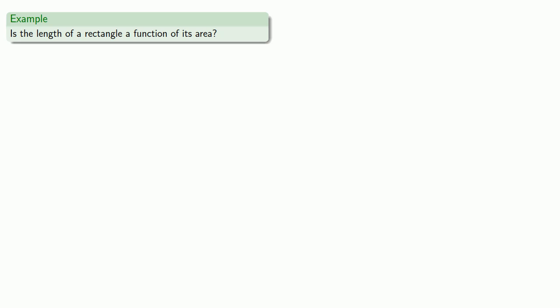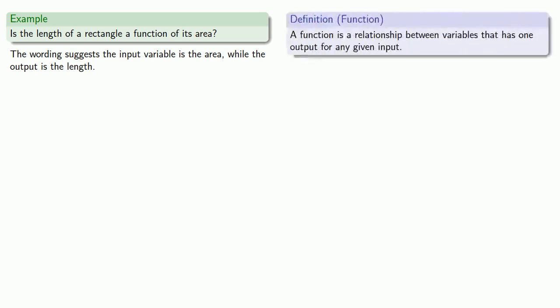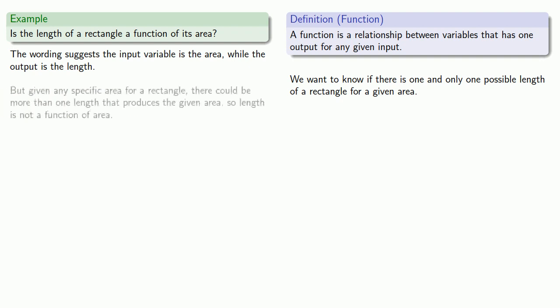How about: is the length of a rectangle a function of its area? The wording suggests that the input variable is the area, while the output is the length. Pulling in our definition of a function, we want to know if there is one and only one possible length of a rectangle for a given area. And the answer to this question is no. Given any specific area for a rectangle, there could be more than one length that produces the given area. So length is not a function of area.